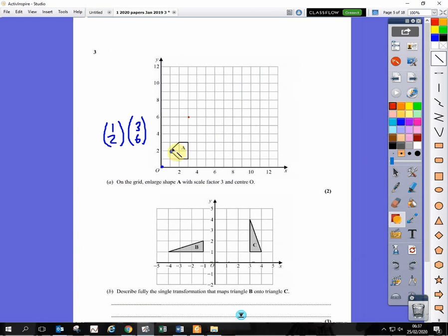So we start at the origin. We have 3 right, 6 up. This point here represents the new left-hand side of the shape. All you need to do now is draw the shape 3 times bigger. So if you notice, it goes 1 square diagonal. So we go 3 squares diagonal. There's 1 square diagonal down here. So we go 3 squares diagonal. 1 square at the top. So 3 squares at the top. And then this should be 6.